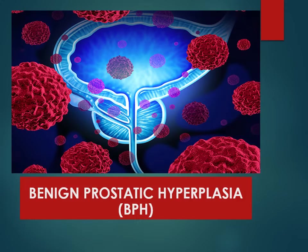Welcome to my talk on benign prostatic hyperplasia, or BPH. Benign prostatic hyperplasia is due to a benign hyperplasia of the cells and tissues of the prostate gland. BPH is a common disease in men above 50 years of age. It is due to enlargement of the prostate gland which causes obstruction of urine outflow from the bladder, causing problems in voiding and storage. It is due to hormonal imbalance that occurs in men of this age.